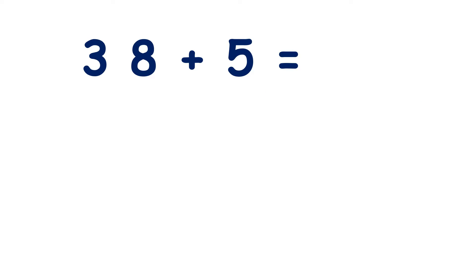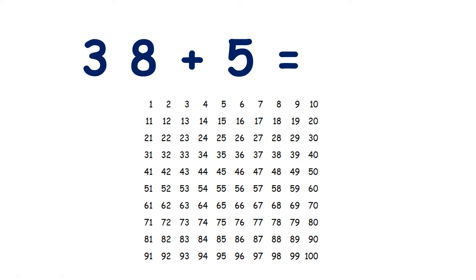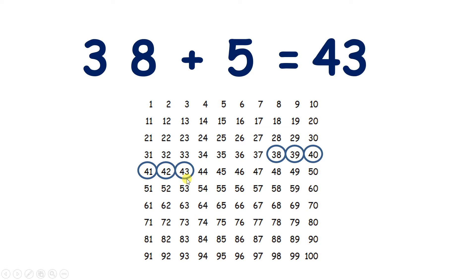So if we have 38 plus 5, we can look at the 100 square. Find the number 38, and then count on. We're adding 5, so we can count on 1, 2, 3, 4, 5. Remember, when we get to the end of one line, we go to the start of the next line on the 100 square. I've landed on the number 43, so that's my answer.